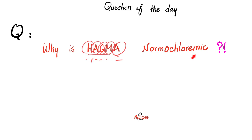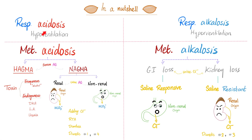When it comes to acid-base imbalances, we have four main conditions: respiratory acidosis, respiratory alkalosis, metabolic acidosis, and metabolic alkalosis. HAGMA and NAGMA are both subtypes of metabolic acidosis. Metabolic acidosis has two types based on the serum anion gap. If the serum anion gap is high, we call it high anion gap metabolic acidosis. If it's normal, we call it normal anion gap metabolic acidosis, which was hyperchloremic.